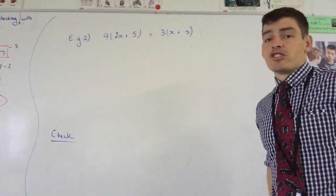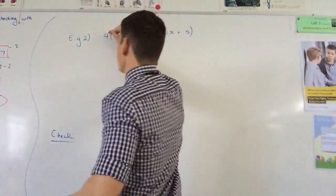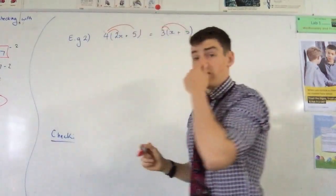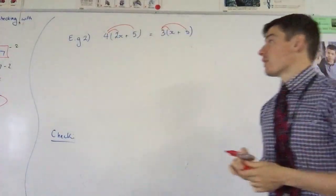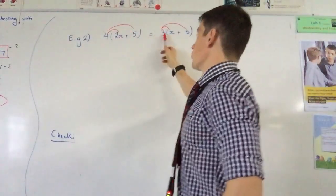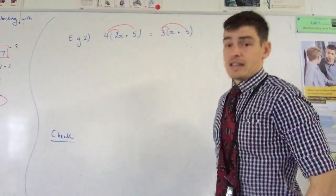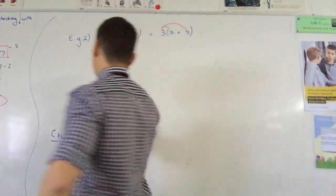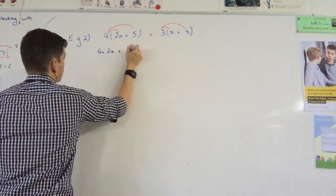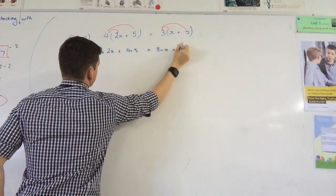Now to approach this problem, the first thing that we need to do is deal with those brackets. I think this is a lot easier if we apply the distributive law to remove those brackets. We've got a multiplication occurring between the 4 and this bracket, and the 3 and this bracket. So that can be rewritten, it's equivalent to saying 4 times 2x plus 4 times 5 equals 3 times x plus 3 times 5.